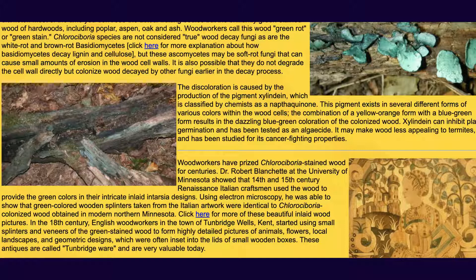Xylindein is classified by chemists as a naphthaquinone. This pigment exists in several different forms of various colors within the wood cells. The combination of a yellow-orange form with a blue-green form results in the dazzling blue-green coloration of the colonized wood.